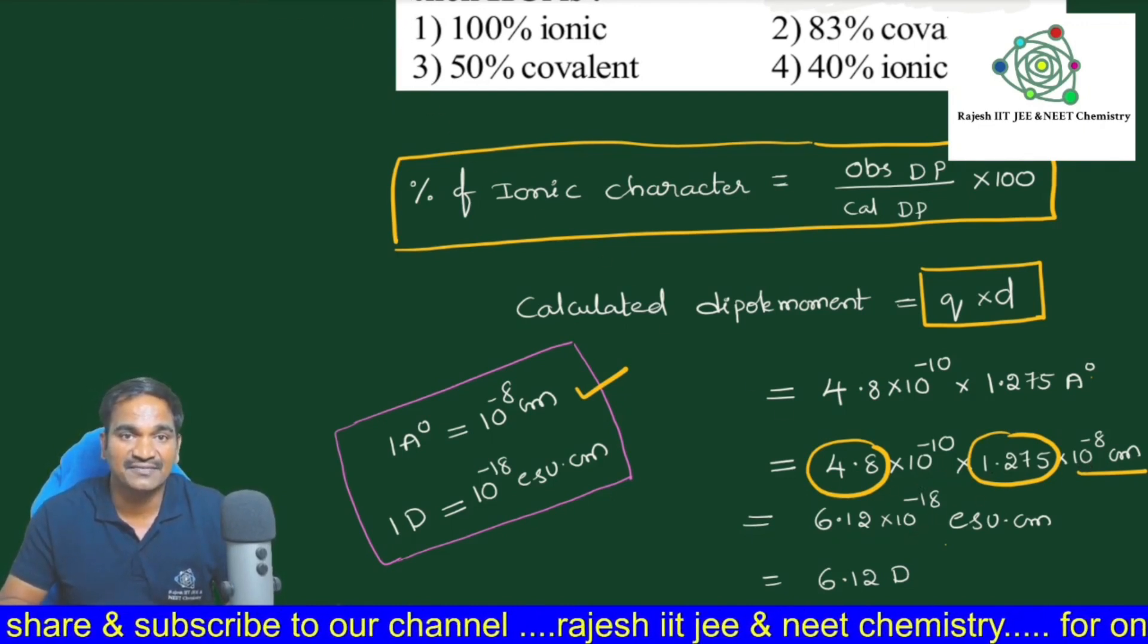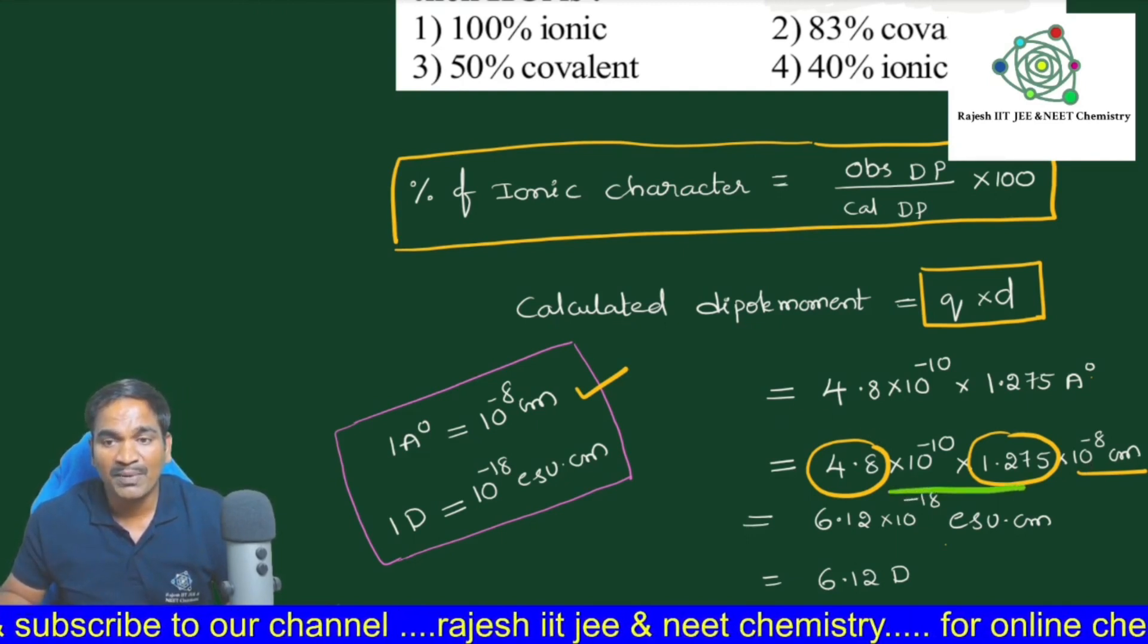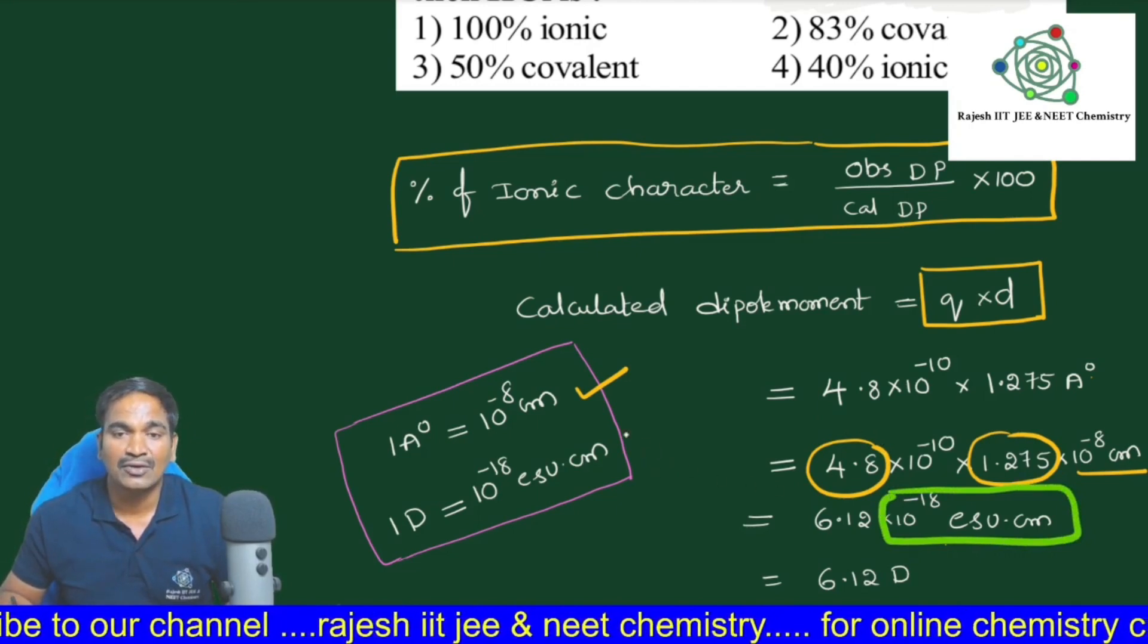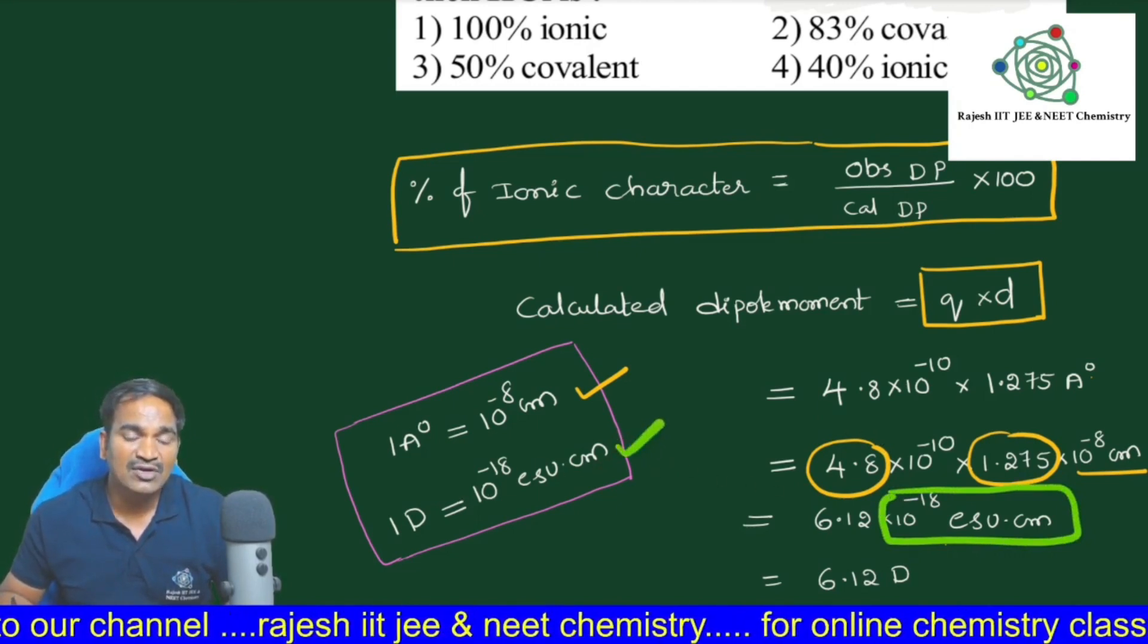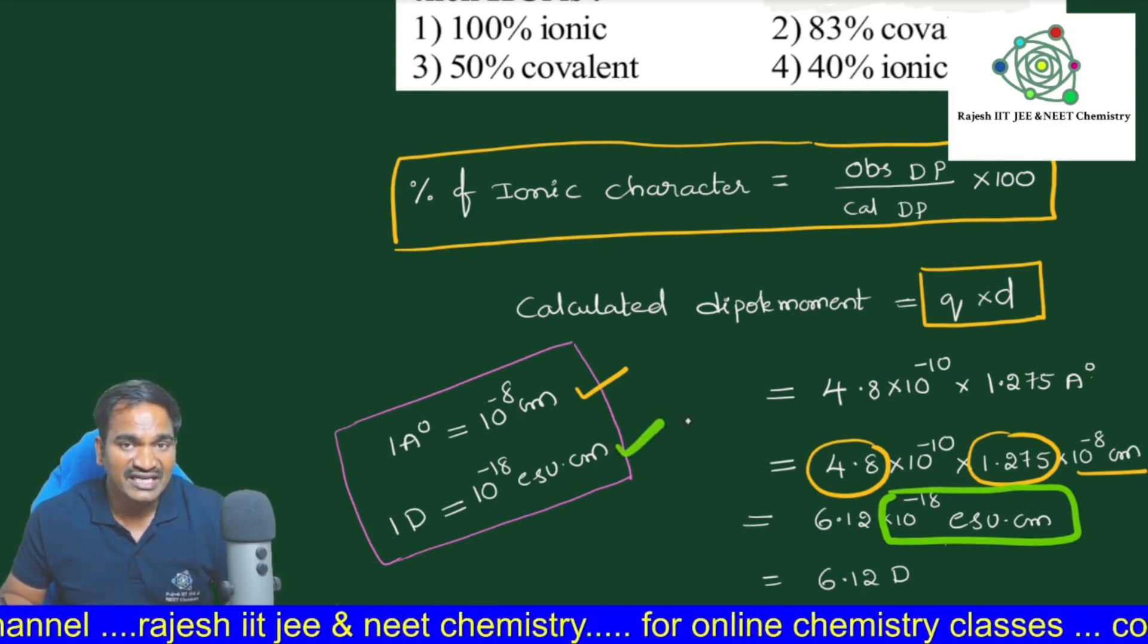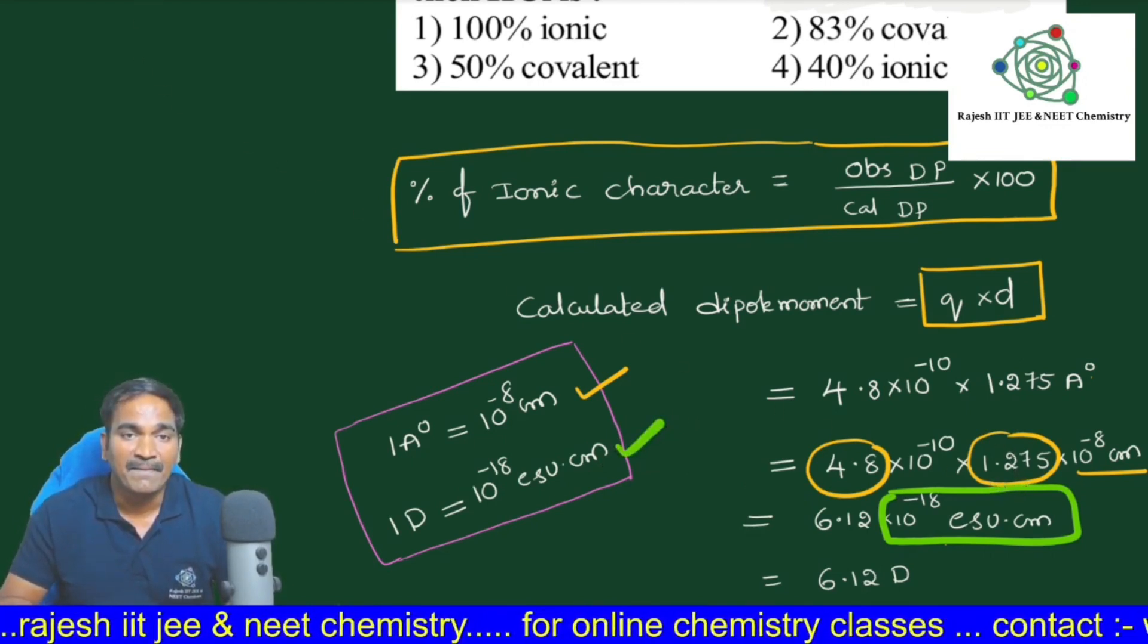Now you see, 10⁻¹⁸ ESU centimeter. 1 debye is equal to 10⁻¹⁸ ESU centimeter, so instead of this 10⁻¹⁸, we can write simply debye is 1 db.